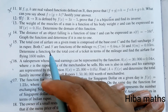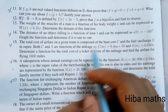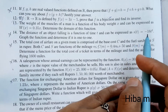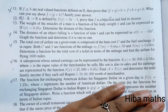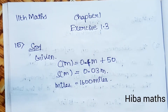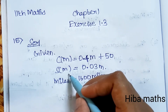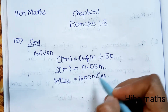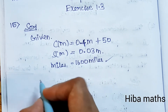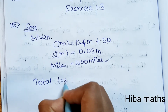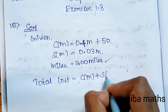Two costs are given: the base cost and the fuel cost as different functions. The base cost C of M is 0.4M plus 50, the fuel cost S of M is 0.03M, and the mileage given is 1600 miles. First, the total cost T of M is equal to C of M plus S of M.